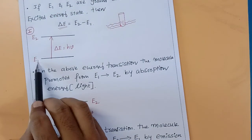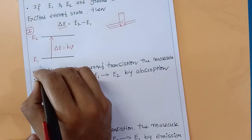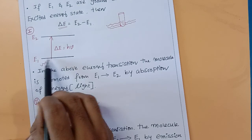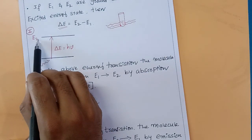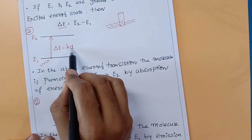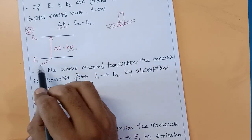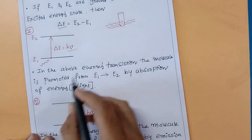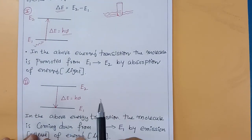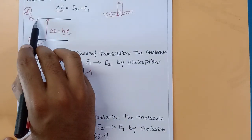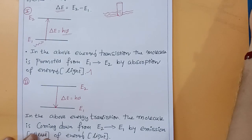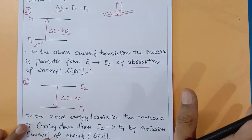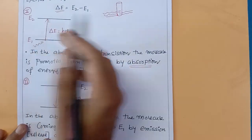When a molecule is in the ground state E1 and electromagnetic radiation is supplied, the molecule moves from ground state E1 to excited state E2. Here, delta E equals h-nu — where h-nu represents the light energy supplied. So in this energy transition, the molecule is promoted from E1 to E2 by absorption of energy. For the molecule to be excited from E1 to E2, it must absorb energy. You can see the arrow mark going from E1 up to E2.